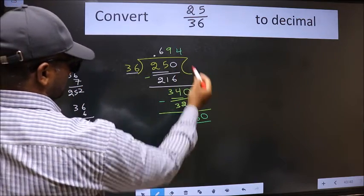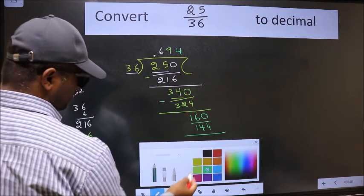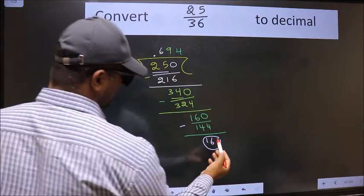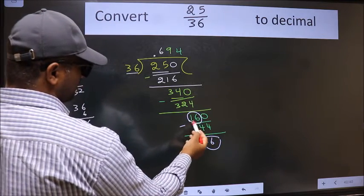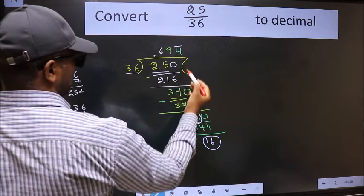36, 4's, 144. Now we should subtract. We got 16. We got 16 again. Earlier also we got 16. That means we get bar on this number.